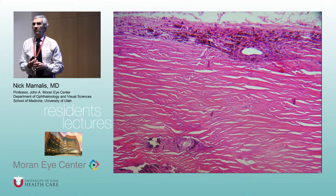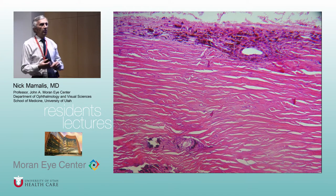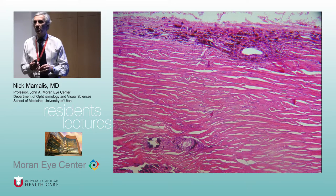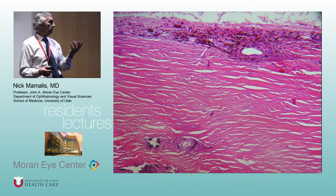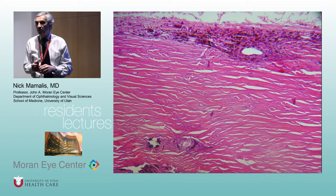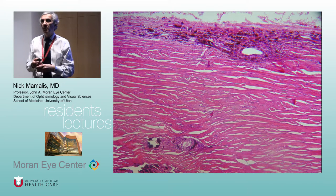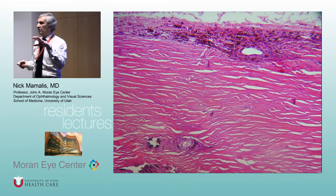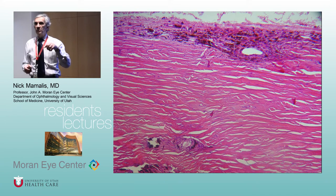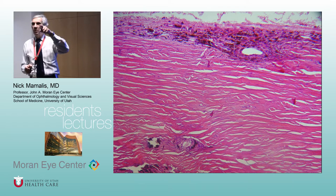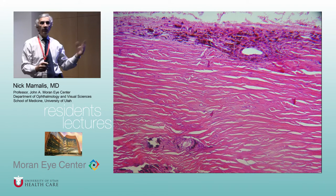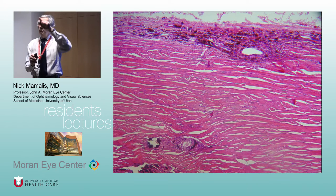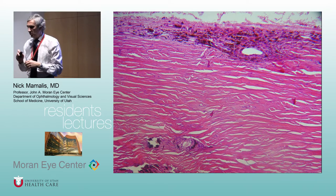For medulloepitheliomas, they look different from melanomas. You can get stretched processes. One important way to tell them apart is ultrasound — using the 50 MHz probe. Medulloepitheliomas have cords of cells trying to make ciliary body tissue with spaces between them, giving alternating high and low spikes on A-scan. Melanomas are very solid with low internal reflectivity. That's the way to tell them apart.